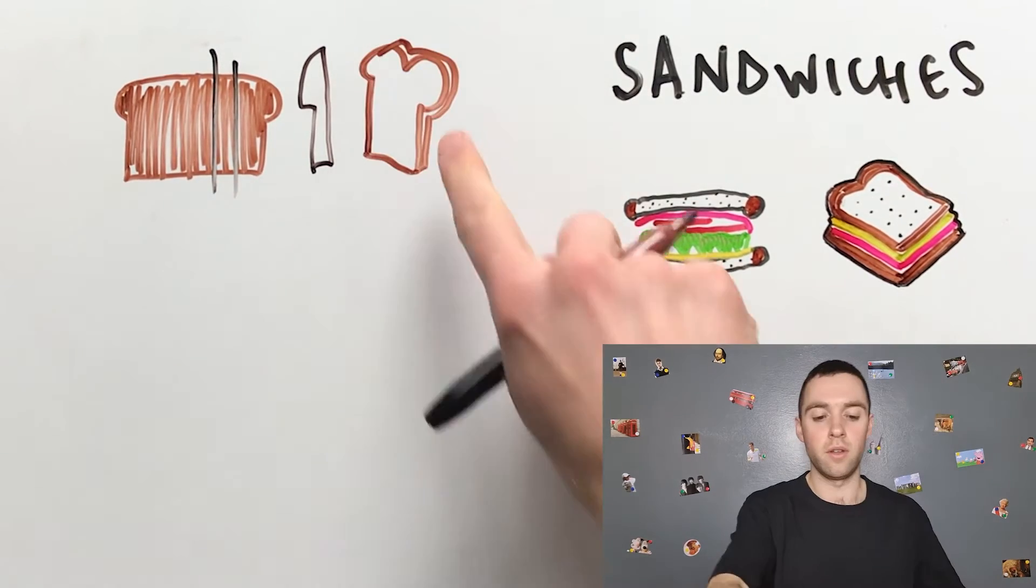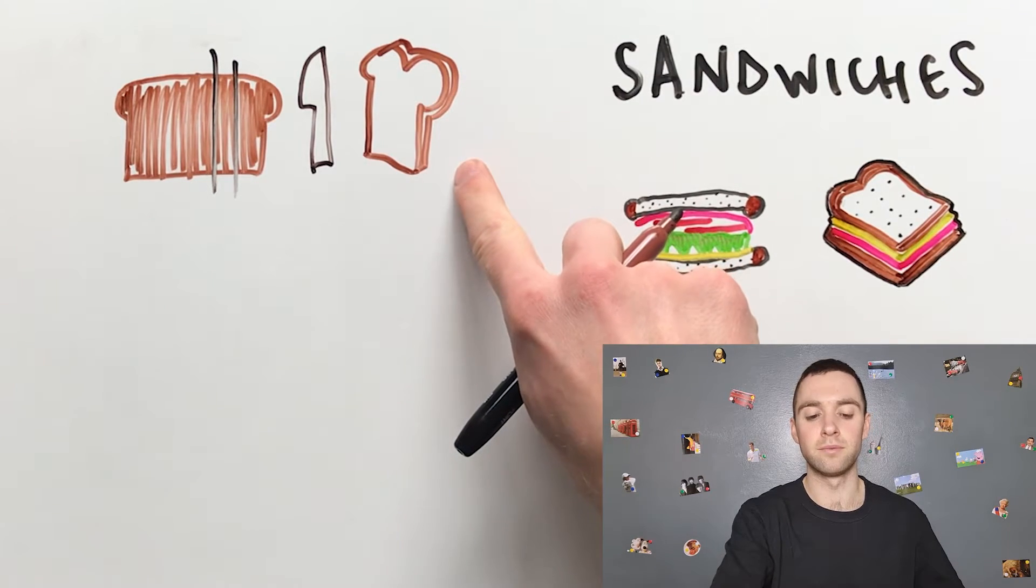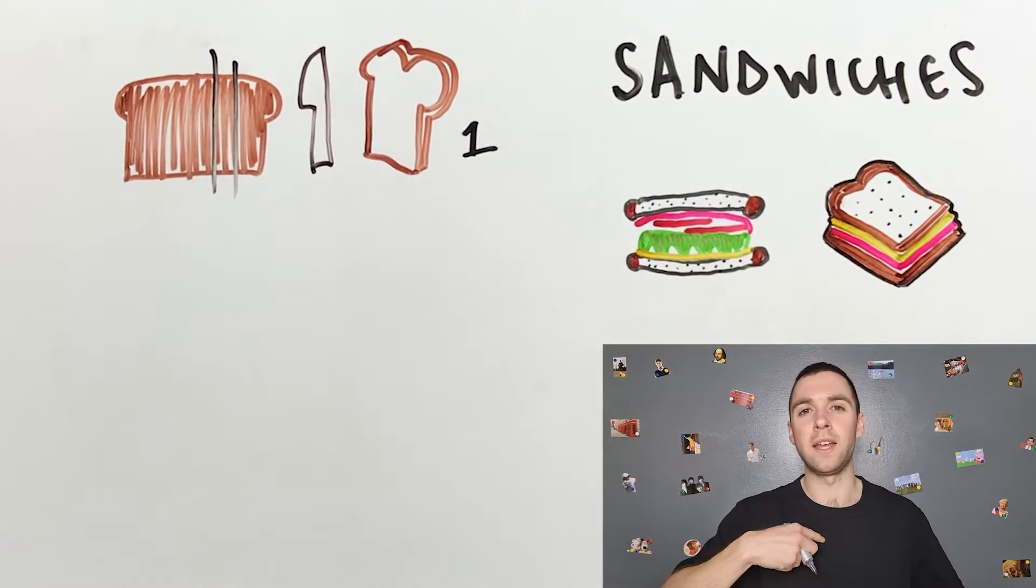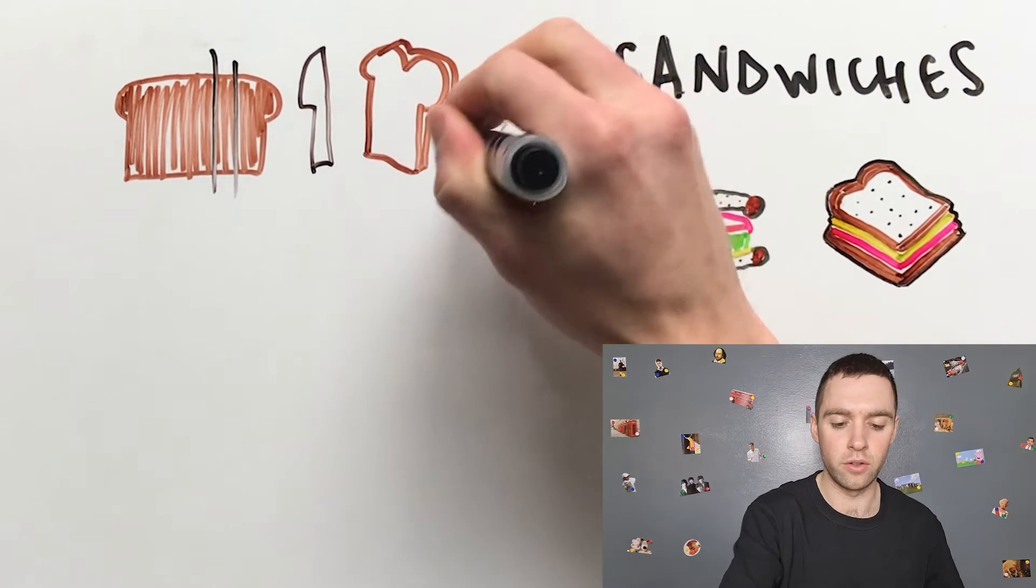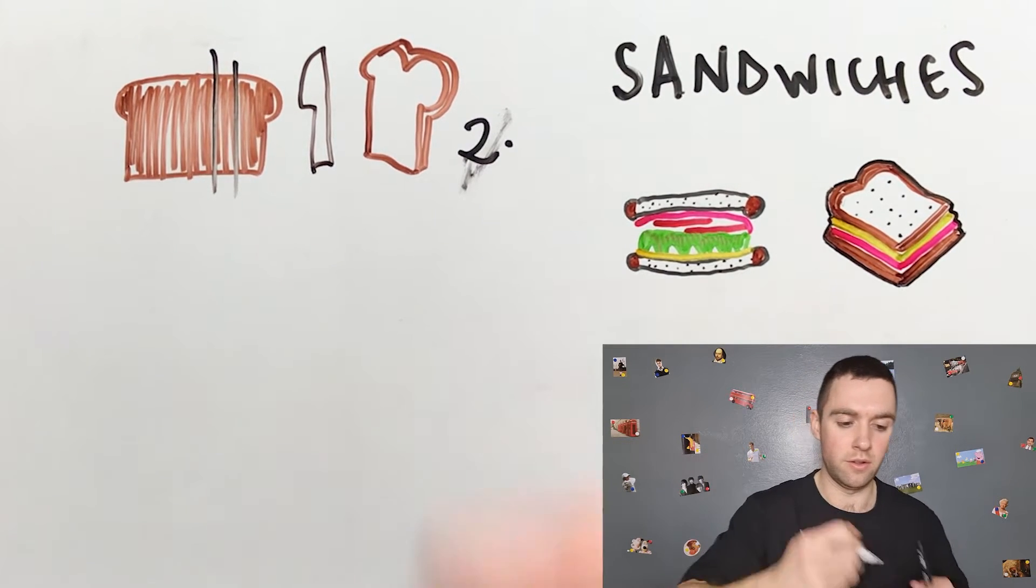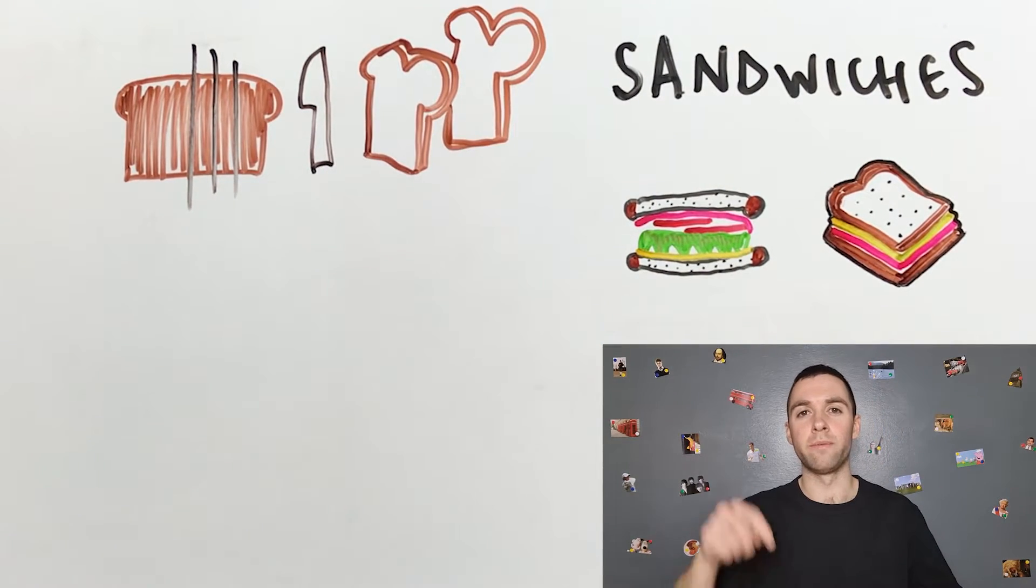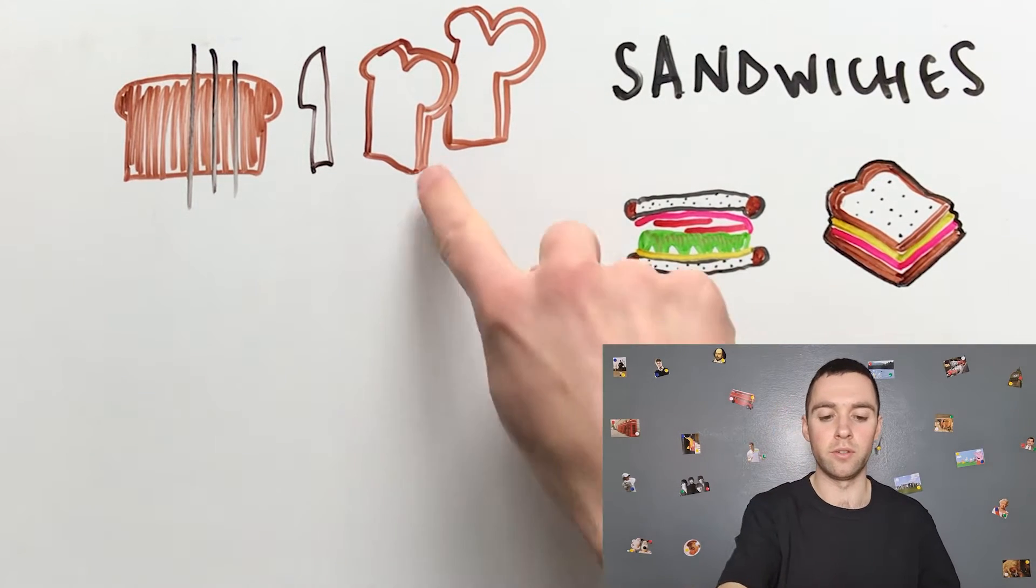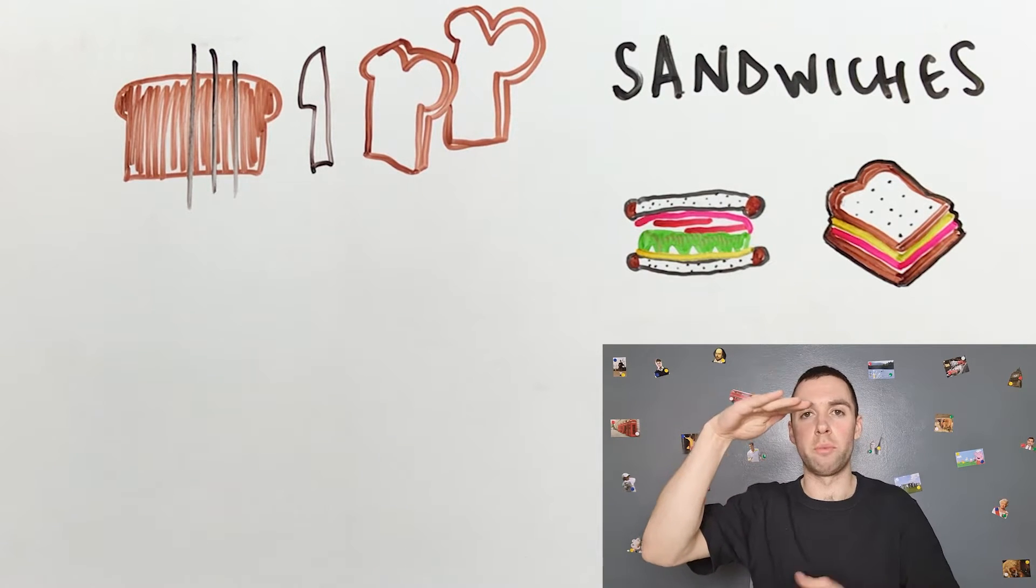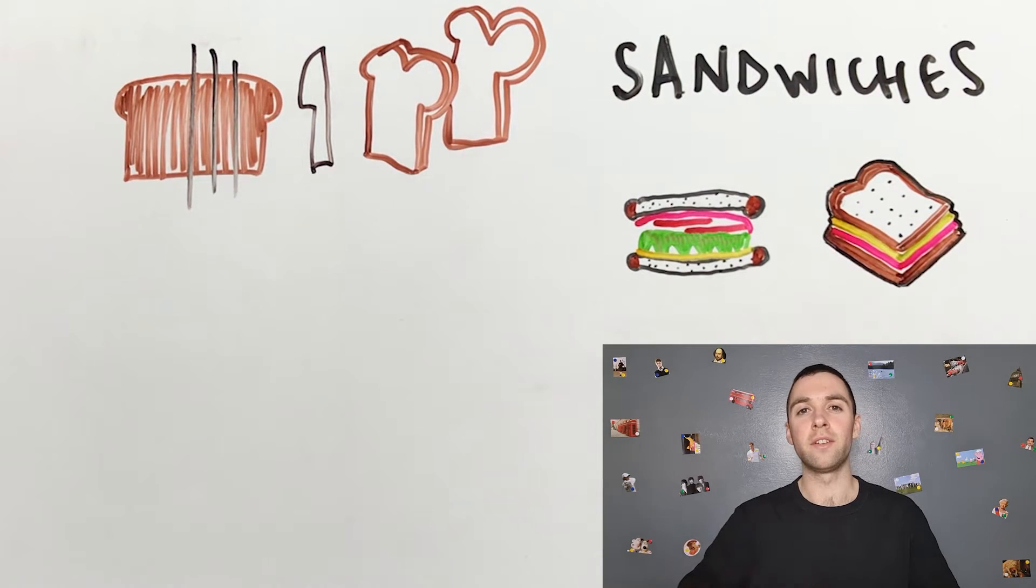There, this gives me a slice of bread. Oh, only one. I need two, so I need to slice the bread again. Okay, now I have two slices of bread for my sandwich, for the top and the bottom of my sandwich. Now I need tuna.